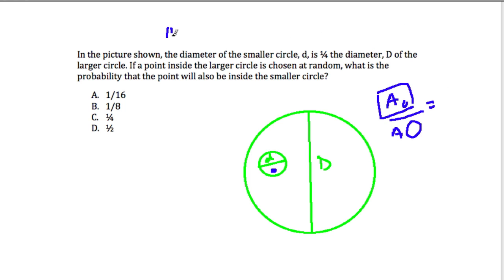Pi r squared is the area formula. And if you remember, that just means if you have a circle, and you draw a radius square, like this.